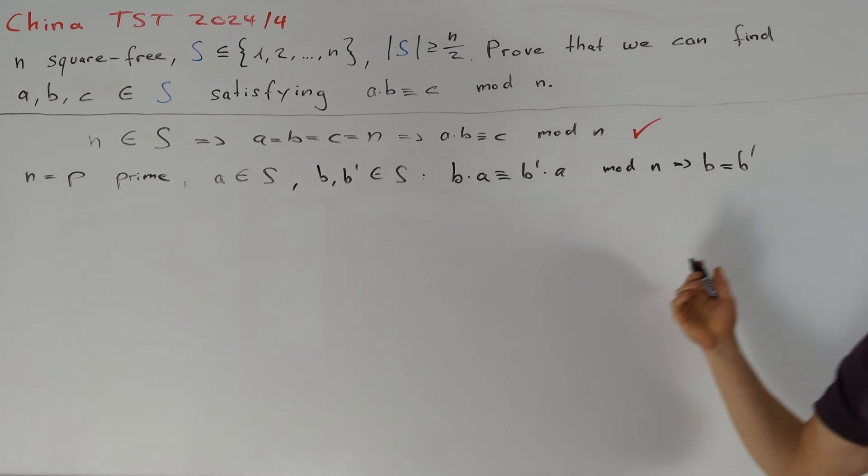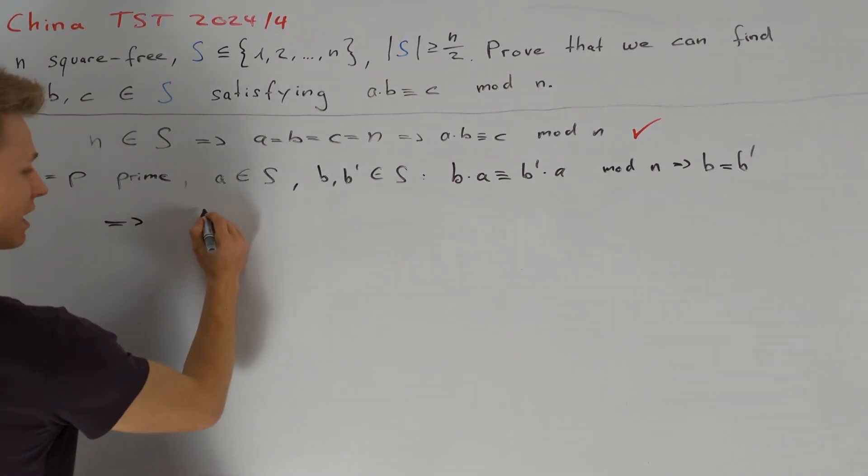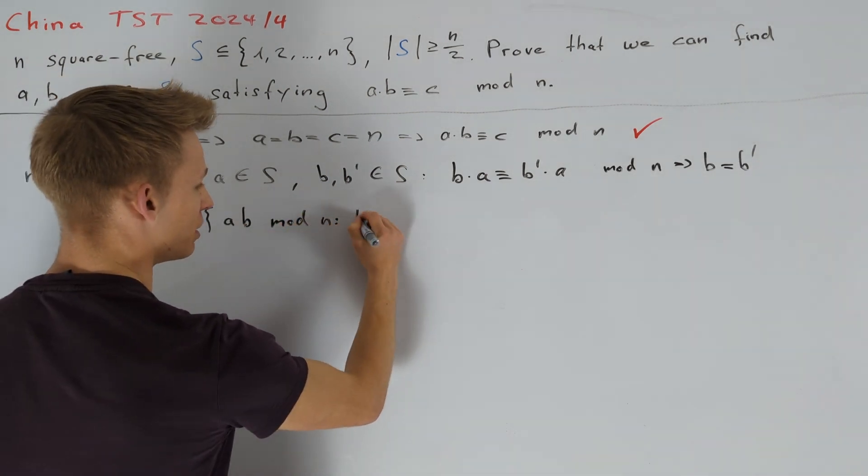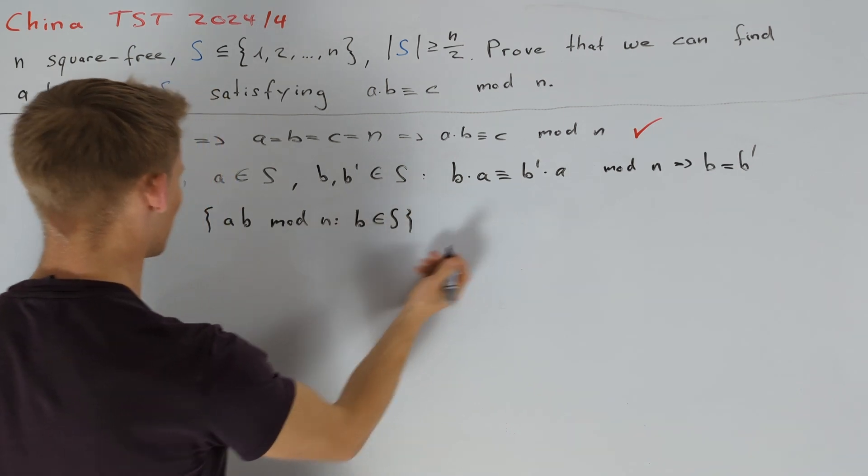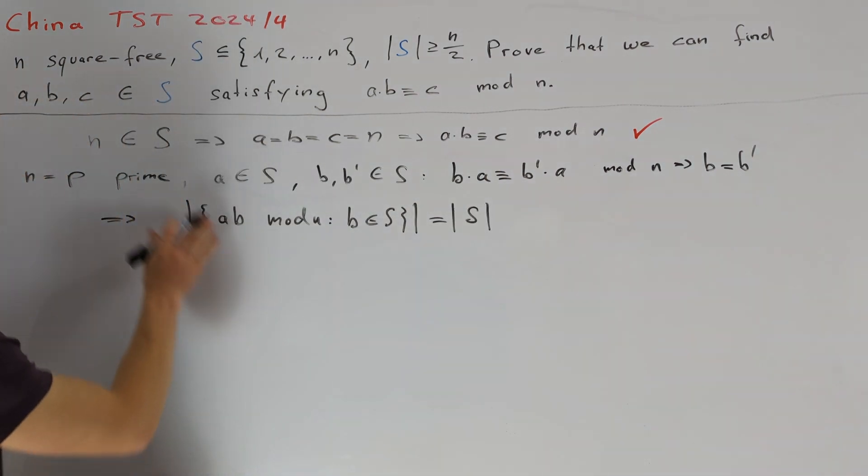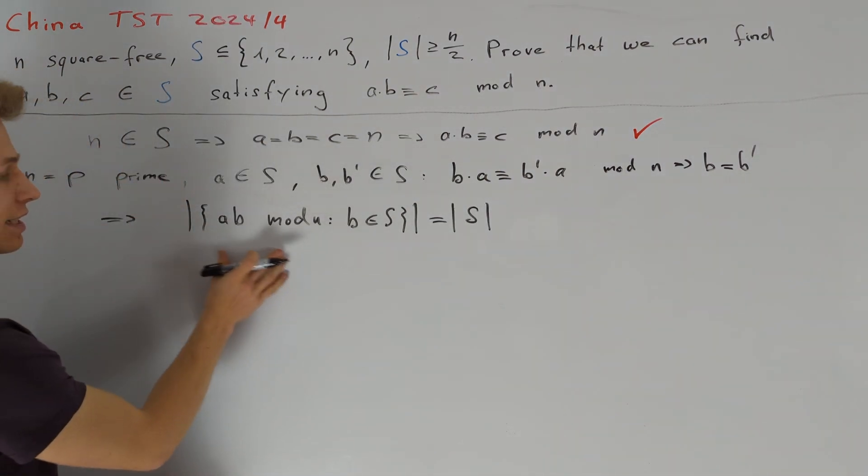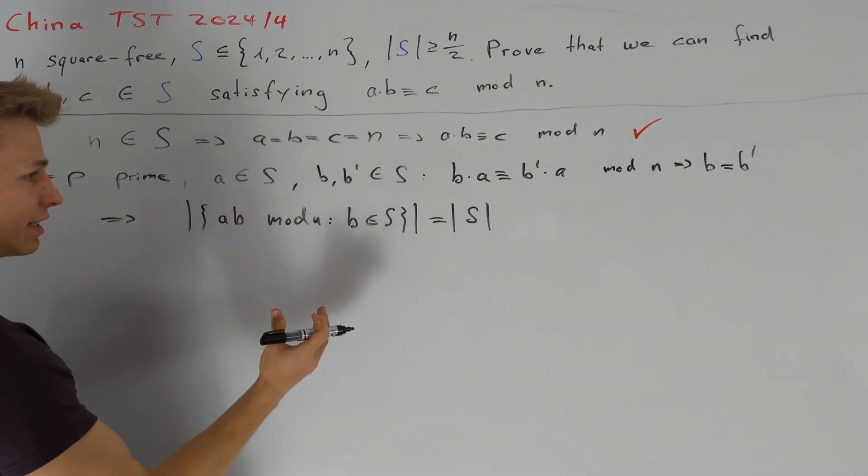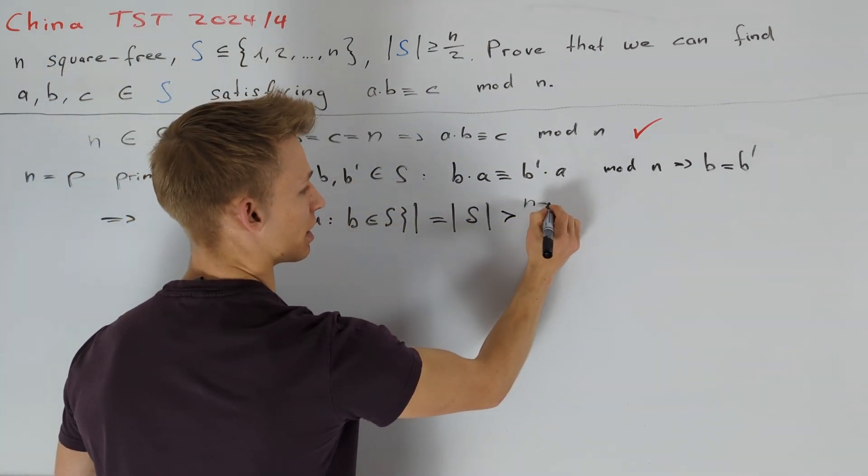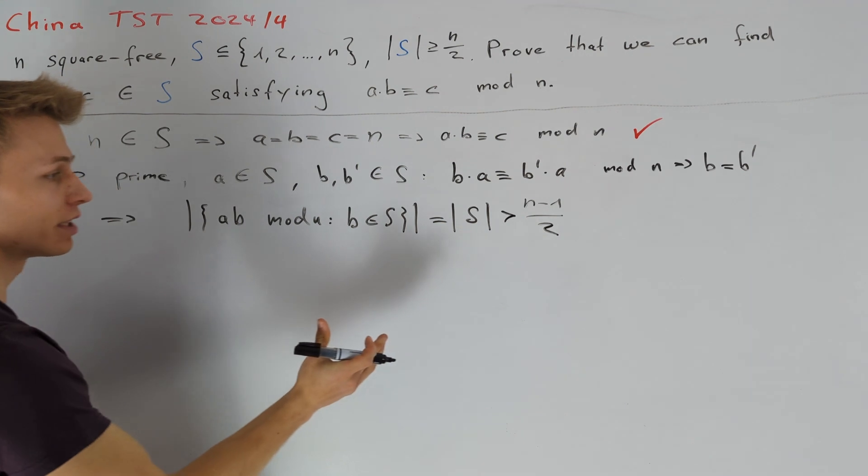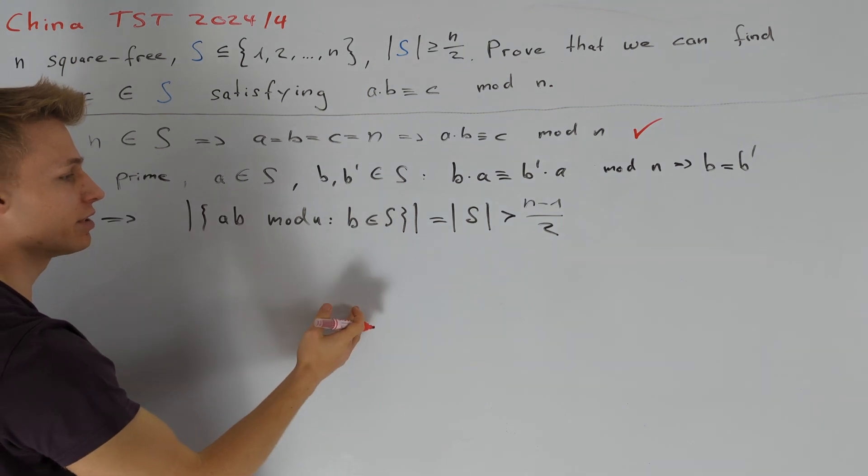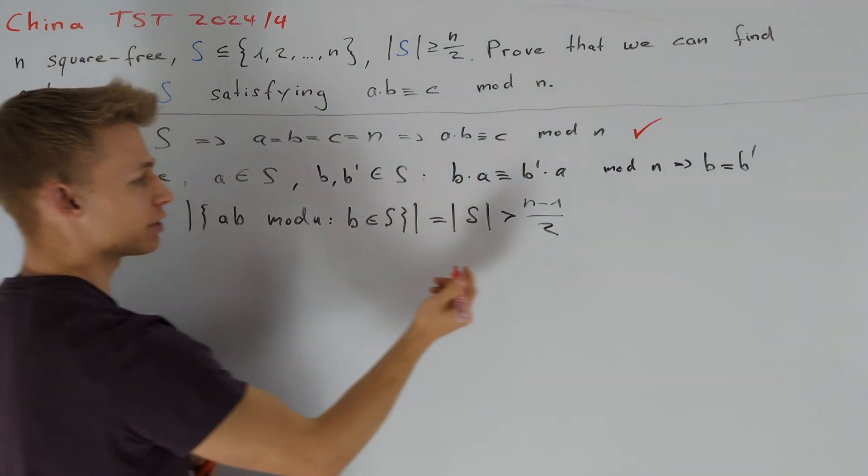This implies that if we consider the set of all residue classes of a times b modulo n, where b should be an element of S, we know that the magnitude of this set here should be equal to the magnitude of S. Moreover, since all of the elements in S are not congruent to 0, we also know that in this set the residue class 0 is not contained. Therefore, since the size of S is greater than or equal to n over 2 or greater than n minus 1 divided by 2, we can conclude that there is a value in this set which is also contained in S. Taking c to be equal to this value gives us the desired result and therefore we are done in this case.